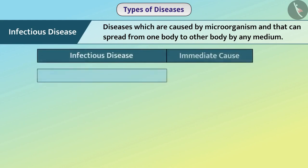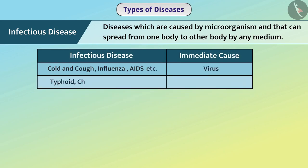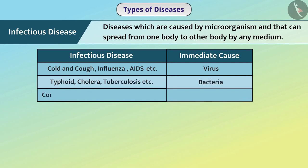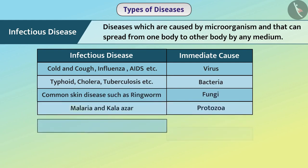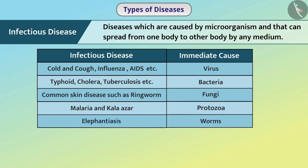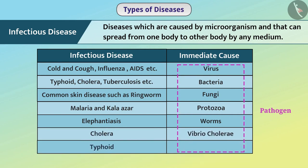For example, diseases like cold and cough, influenza, and AIDS are caused by viruses. Typhoid, cholera, and tuberculosis are caused by bacteria. Common skin diseases such as ringworm are caused by fungi. Malaria and Kala-azar are caused by protozoa. Elephantiasis is caused by worms. The microorganism that causes the disease is called a pathogen. For example, cholera is caused by the pathogen Vibrio cholerae and typhoid is caused by Salmonella typhi.